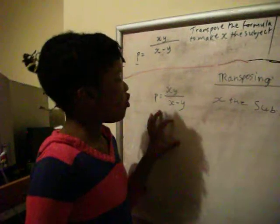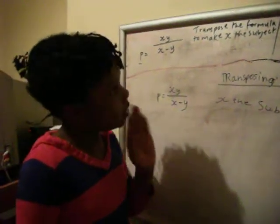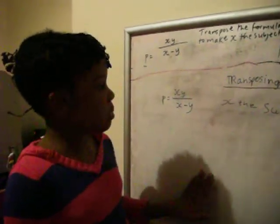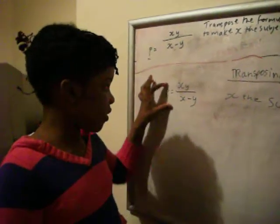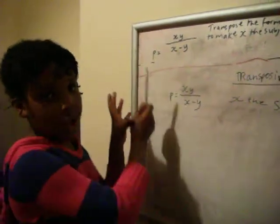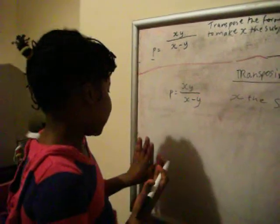So first we're going to look at this formula and we're going to transpose the formula to make x the subject, which simply means since p is the subject and one side makes the formula by itself, that's what the subject basically is.